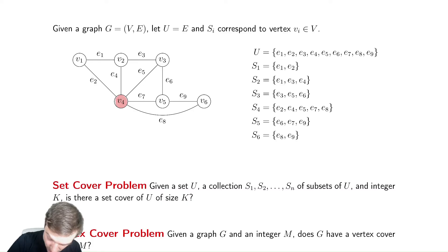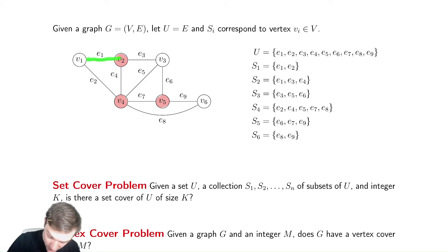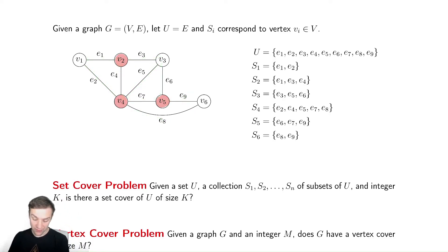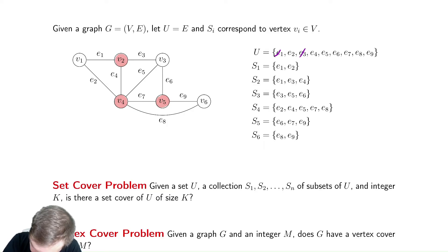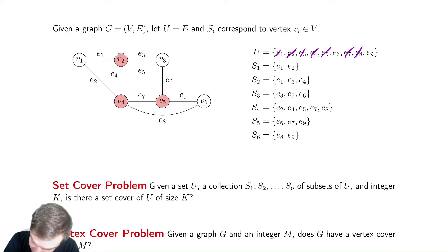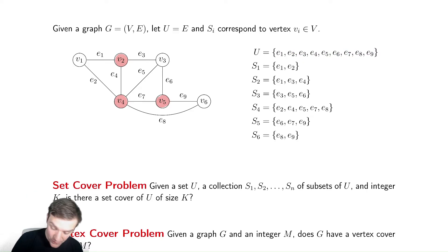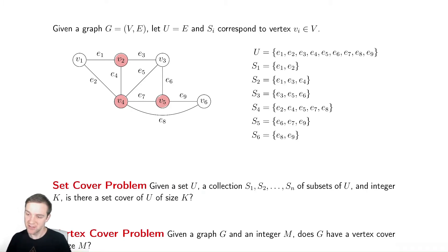Let's say we had a vertex-cover V4, V2, V5. Every edge is covered by a red vertex, so V2, V4, V5 is a vertex-cover. Looking at the corresponding sets: S2 gives us E1, E3, E4; S4 gives us E2, E4, E5, E7, E8; and S5 gives us E6, E7, E9. So it is also a set-cover. If we have a vertex-cover it covers all edges, so unioning those sets obviously covers everything.